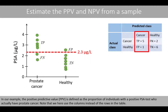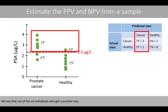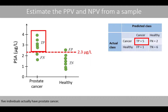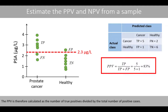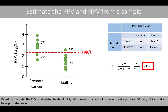Note that we here use the columns instead of the rows in the table. We see that out of the 6 individuals who get a positive test, 5 individuals actually have prostate cancer. The positive predictive value is calculated as the number of true positives divided by the total number of positive cases. Based on our data, the positive predictive value is 83%, which means that out of those who get a positive PSA test, 83% actually have prostate cancer.